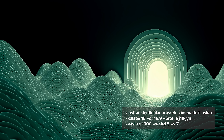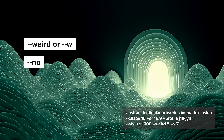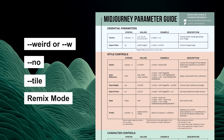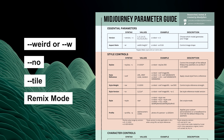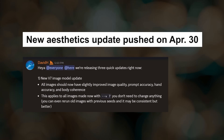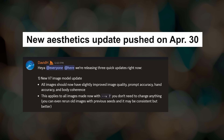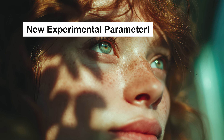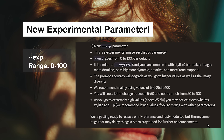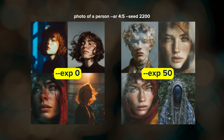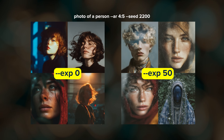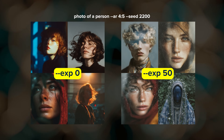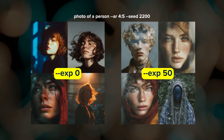Features recently enabled for V7 include the weird, no, and tile parameters plus remix mode. I just updated my free parameter guide with notes on V7 — I'll leave a link to that down below. A new aesthetics update was pushed to improve image quality, prompt accuracy, and hand and body coherence. There is also a new experimental parameter, --exp, which sort of acts like another axis of the stylize knob. You can use it to get more dynamic and creative images, but you will lose prompt adherence and diversity. It's not clear whether this will develop into a long-lasting parameter, hence the name, but it's something new to play with.